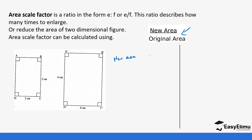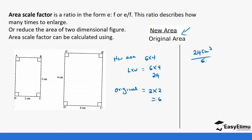The new area is going to be the image, which is 6 times 4, because the area for a rectangle is length times width, giving us 6 times 4 which is 24. The original area is the area of the object ABCD, so it becomes 3 times 2 which gives us 6. So the area scale factor will be 24 over 6, and when you divide you get 4.